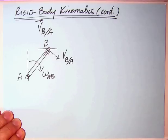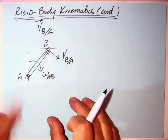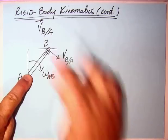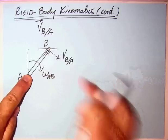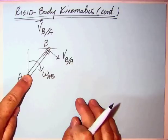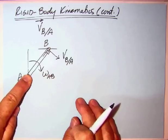And so what we're saying is the velocity of B is equal to the velocity of A, plus the velocity of B relative to A, as if A is fixed. Well, if A is fixed, then B can only go around in a circle. Velocity of B relative to A has got to be perpendicular to that.